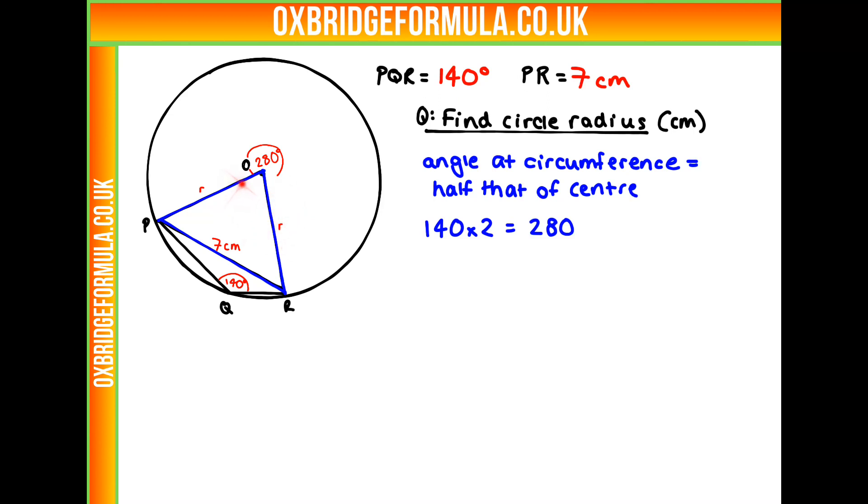So from this, we can work out our angle in our triangle there, which I'm going to call X. X must be 360, which is a full circle, take away our angle there, 280. So our angle X is 80 degrees.